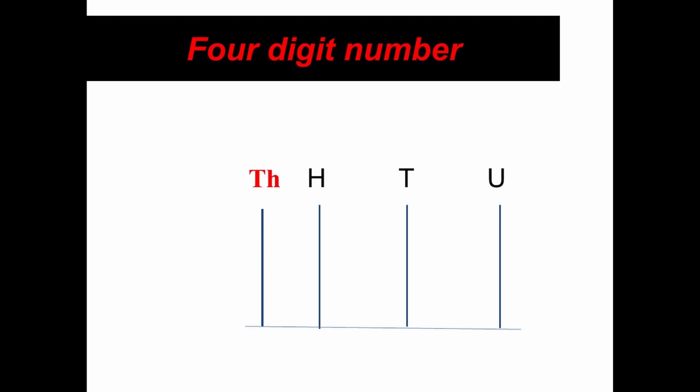On the abacus, to write a four digit number: on the extreme right we write U for units, to its left T for tens, to its left H for hundreds, and to its left Th which represents thousands. Let us now see some examples of four digit numerals on the abacus.